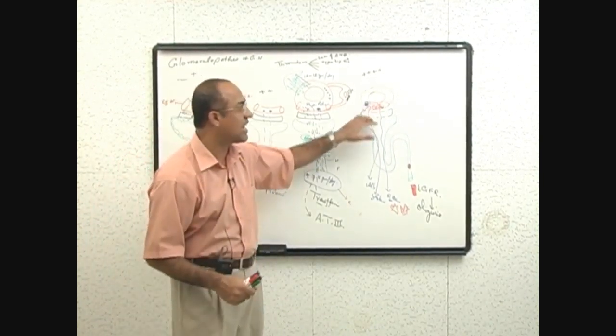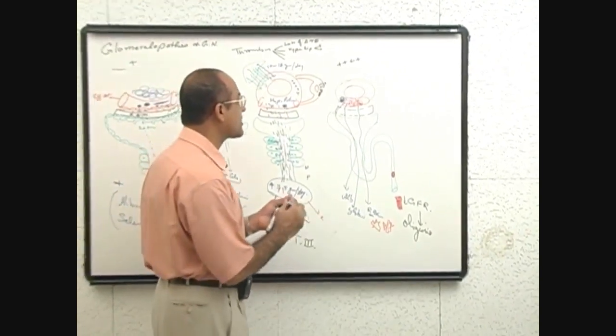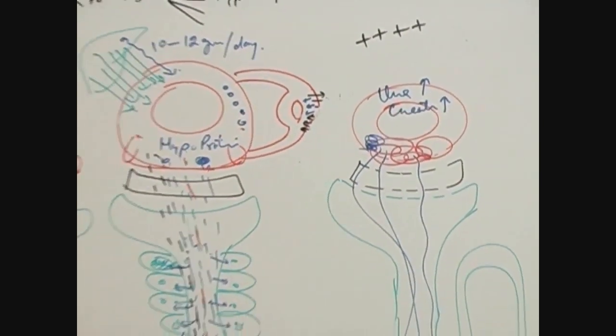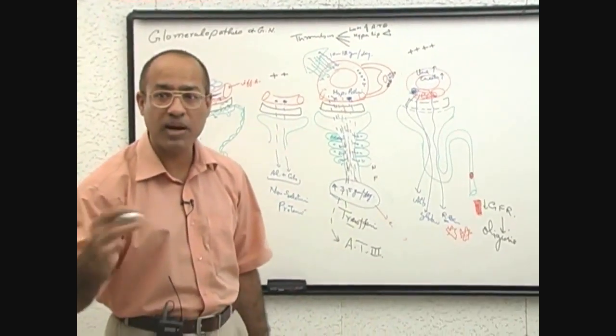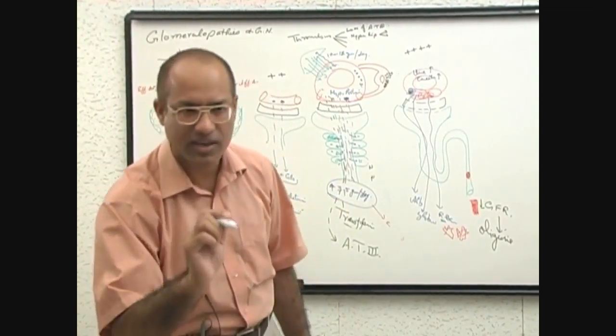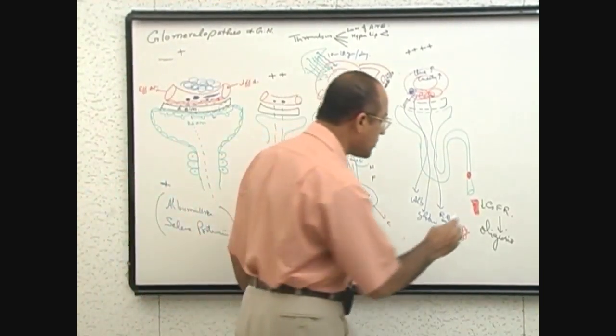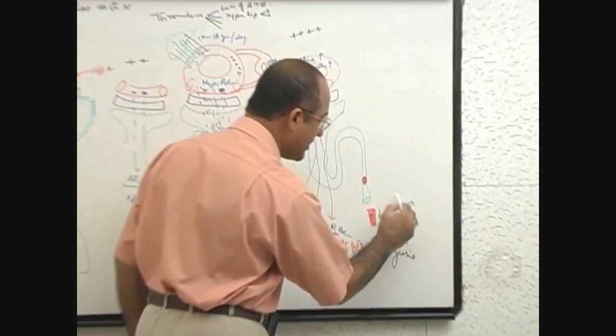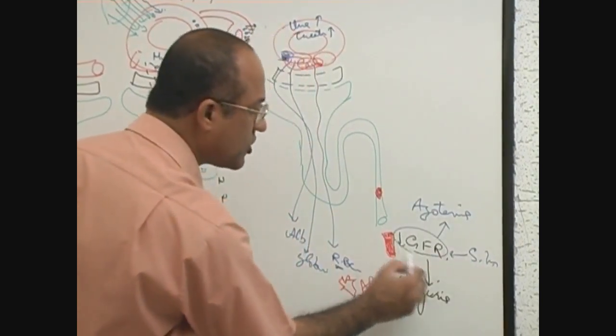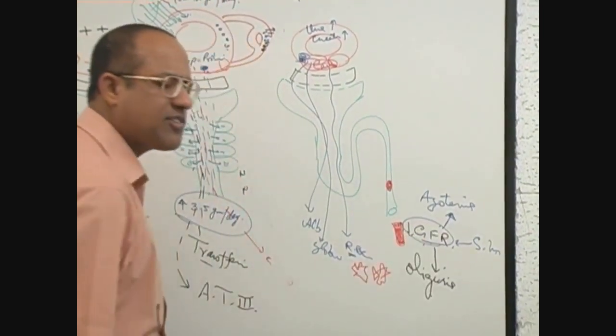And when GFR is less, do you think waste products from the blood will be removed properly? No. So urea and creatinine start accumulating in the blood. Urea goes up and creatinine goes up. So blood biochemistry is now further disturbed. Urea and creatinine are rising. This biochemical disturbance of the blood is given a special name - azotemia. So patients start developing azotemia. Look, severe inflammation led to reduced GFR. Reduced GFR led to oliguria. And less GFR reduces the capability of the kidney to...